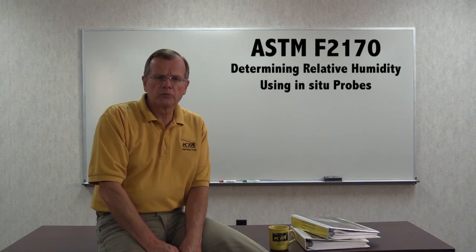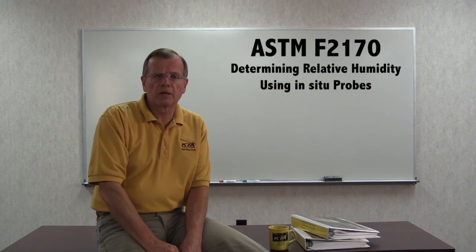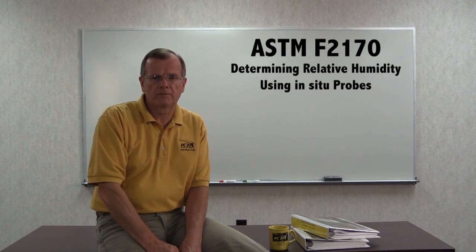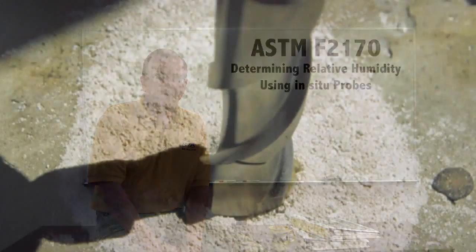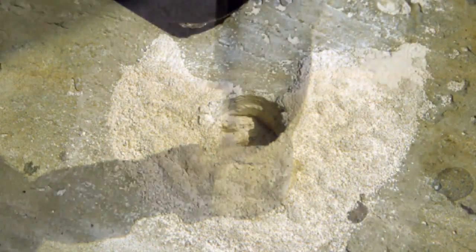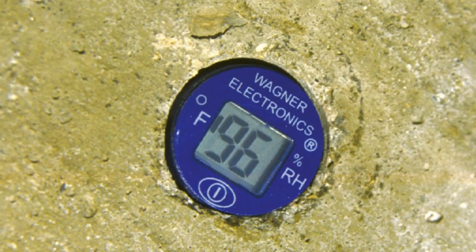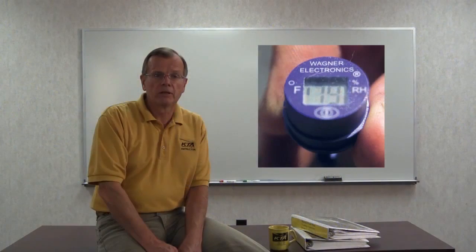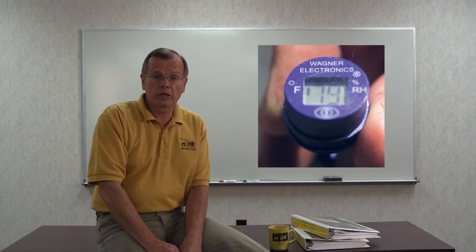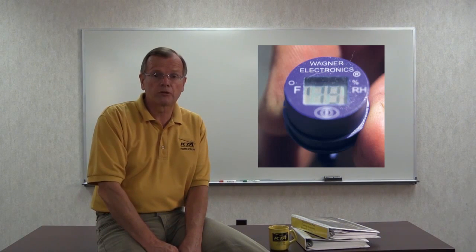Relative humidity probes. This method is addressed in ASTM F2170. This is a destructive test that requires drilling small holes in the slab, inserting hollow sleeves, and after a given waiting period, inserting probes into the sleeves to determine the relative humidity of the slab. The results are displayed directly as relative humidity, with no conversions needed.